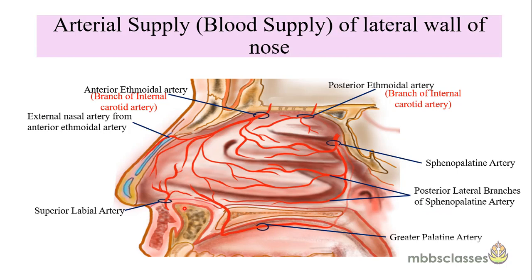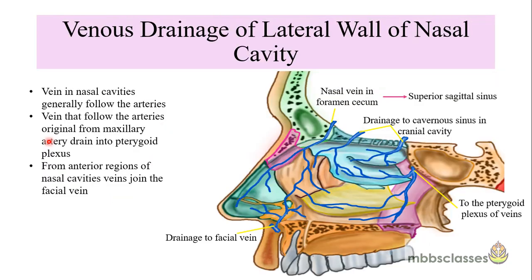The blood supply of the lateral wall of the nose is similar to that of the nasal septum, receiving supply from both the external and internal carotid systems. From the internal carotid system: anterior and posterior ethmoidal arteries. From the external carotid system: the sphenopalatine artery and its posterior lateral branches, the superior labial artery, and the greater palatine arteries. Venous drainage follows the arteries: veins from the maxillary artery drain into the pterygoid plexus, veins of the anterior nasal region join the facial vein, from the superior most part they drain into the cavernous sinus, and nasal veins at the foramen cecum may drain directly into the superior sagittal sinus.